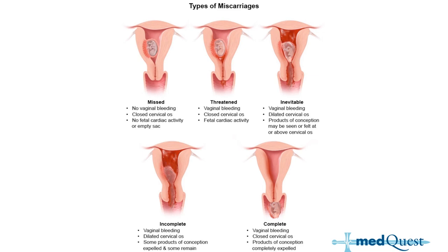An inevitable abortion presents with vaginal bleeding and the cervical os is open — once the cervix starts to dilate, it's only a matter of time before the patient miscarries, hence 'inevitable.' Fetal cardiac activity may still be present. An incomplete abortion also has vaginal bleeding and a dilated os, but some products of conception are still left inside — the difference from inevitable is that inevitable has everything still inside, while incomplete has only portions remaining. A complete abortion has vaginal bleeding but the os is now closed because all products of conception have been evacuated spontaneously.